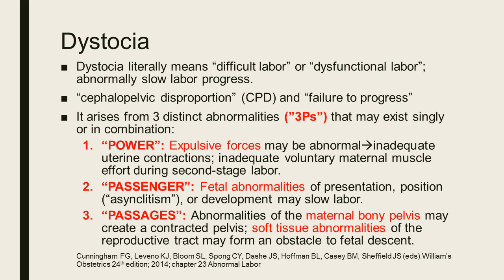Abnormal labor is also called dystocia, which literally means difficult labor, dysfunctional labor, or abnormally slow labor progress. It is also termed cephalopelvic disproportion (CPD) or failure to progress. It arises from three distinct abnormalities — the three P's of dystocia — which may exist singly or in combination: power, passenger, and passages.